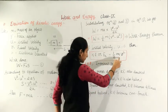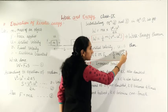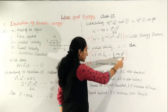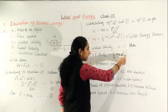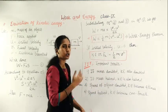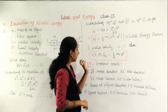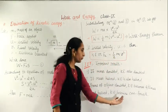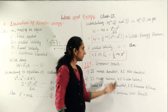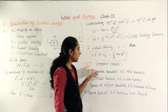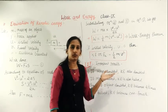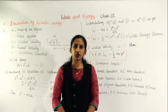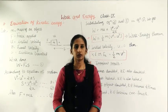Now consider the velocity term — it is squared, so any change is amplified. If speed is doubled, kinetic energy becomes four times. If speed is halved, kinetic energy becomes one-fourth. These are important results. Write the derivation in your notebook and send it to me. Thank you.